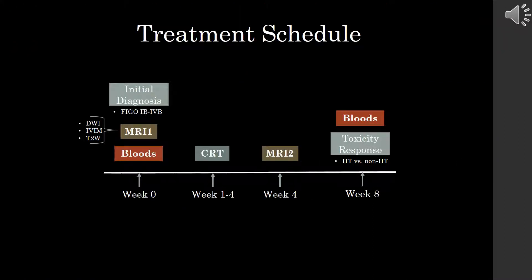Moving on to the materials and methods. The treatment schedule was as follows: locally advanced cervical cancer patients had an initial clinical diagnosis, after which they received additional radiological diagnosis. This is where we acquired diffusion-weighted imaging and its IVIM counterpart. Baseline bloods were also taken for toxicity response later. Patients were then sent for their four-week concurrent chemoradiotherapy, after which a second MRI scan was taken for post-treatment response. Post-treatment bloods were also taken to evaluate for toxicity response. Here we dichotomized patients based on their hematological toxicity, HT for short.